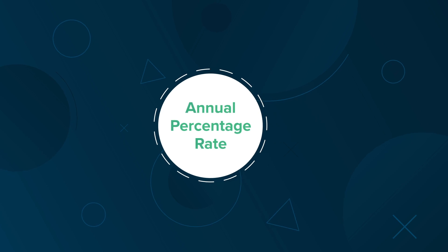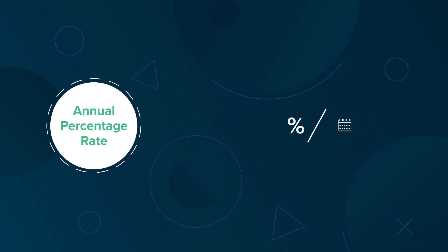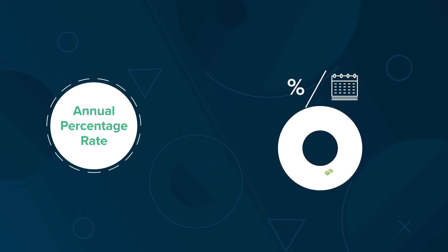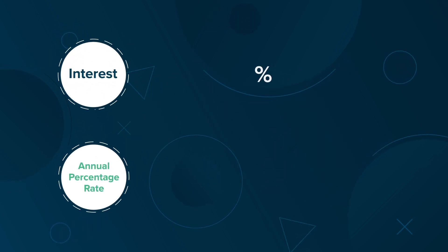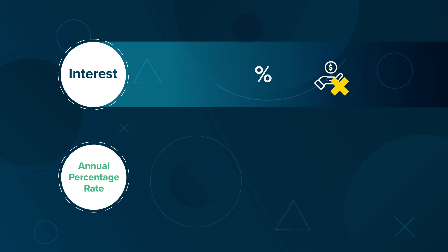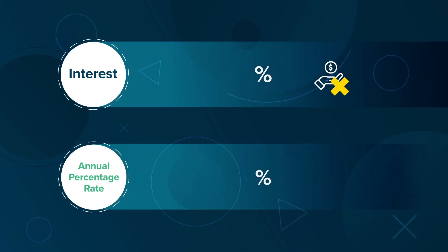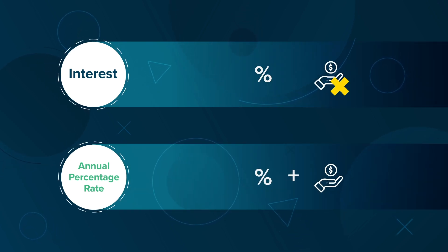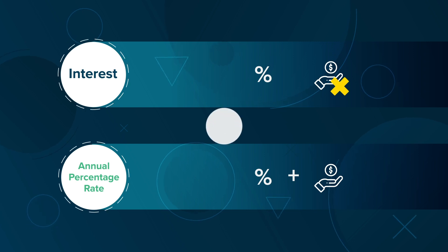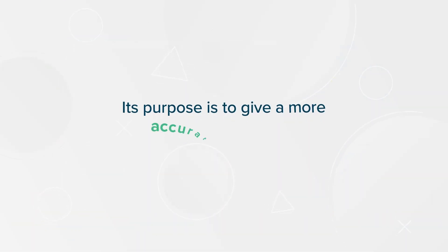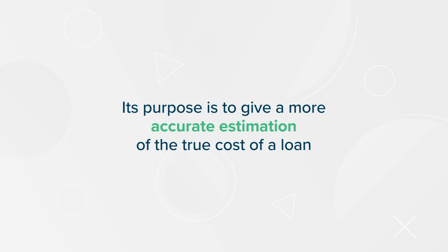APR, or Annual Percentage Rate, is a rate charged per year on an amount of money that is borrowed as a loan. While interest rate is only the percentage charged without fees, APR is the interest rate plus fees, stated as an annual percentage of the amount loaned. Its purpose is to give a more accurate estimation of the true cost of a loan.